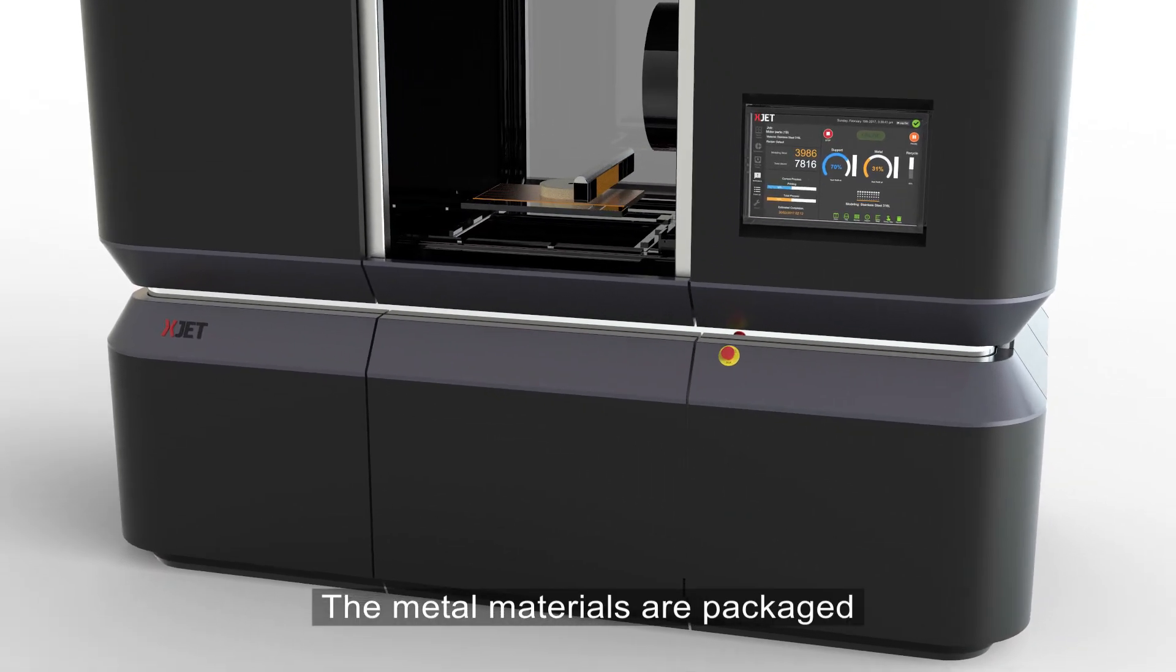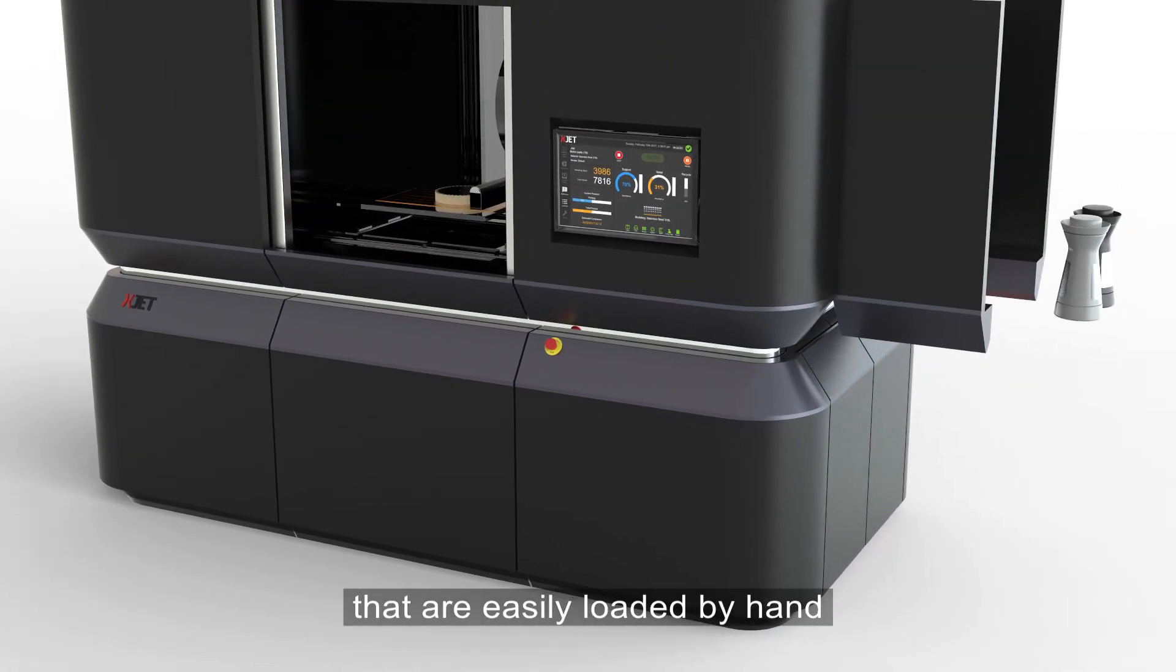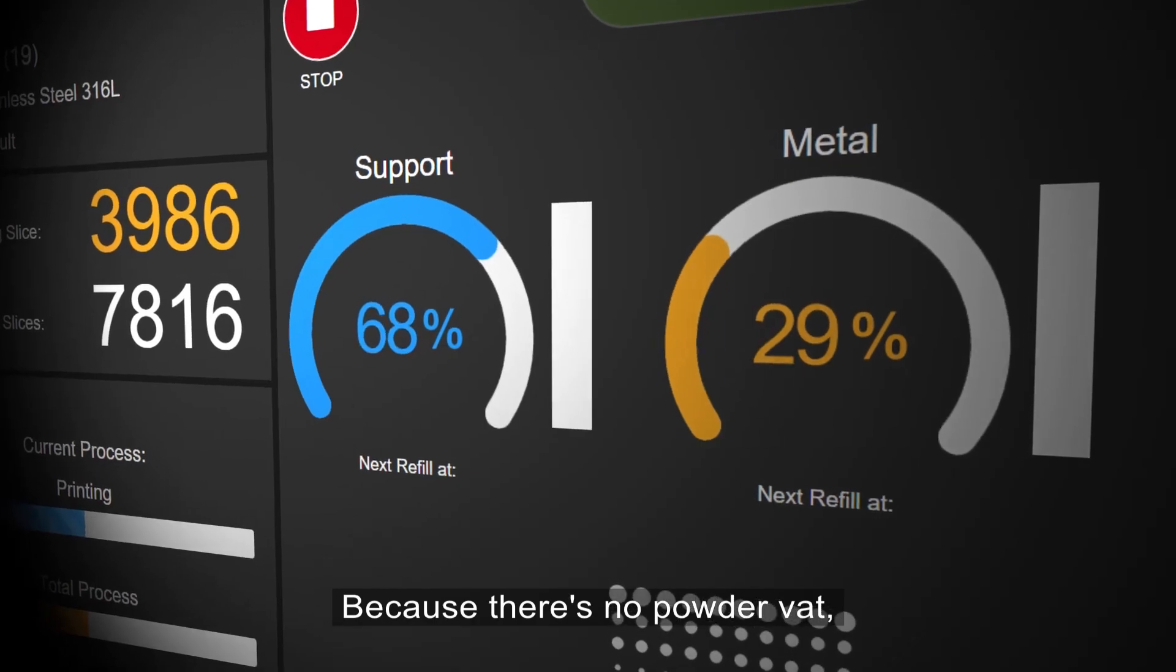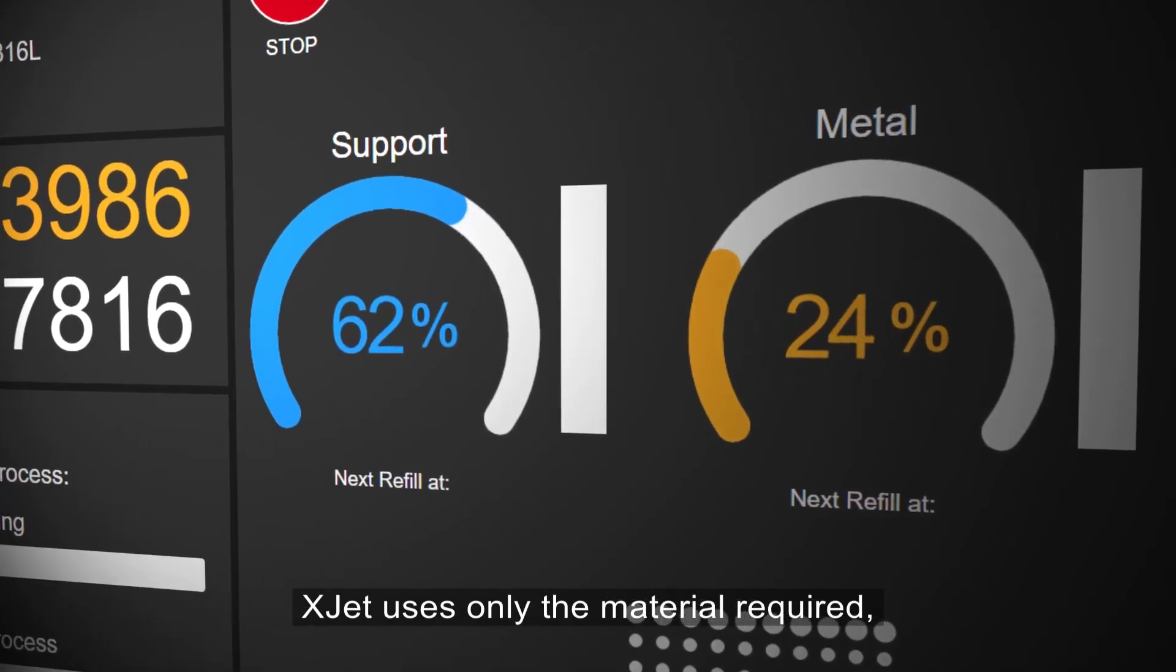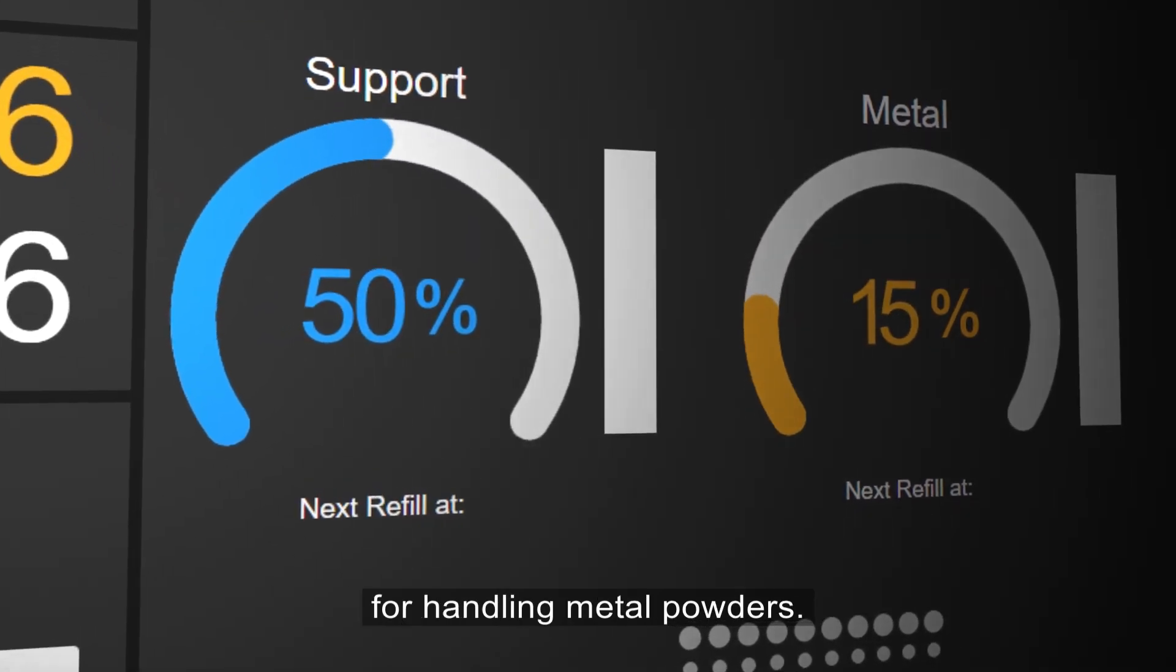The metal materials are packaged within specially adapted cartridges that are easily loaded by hand into the XJET system. Because there's no powder vat, XJET uses only the material required, saving space and eliminating the need for handling metal powders.